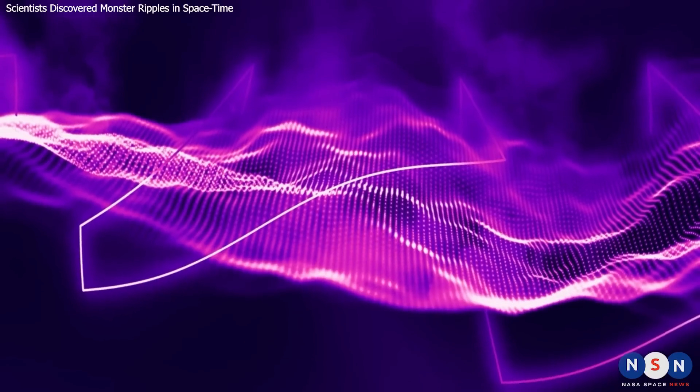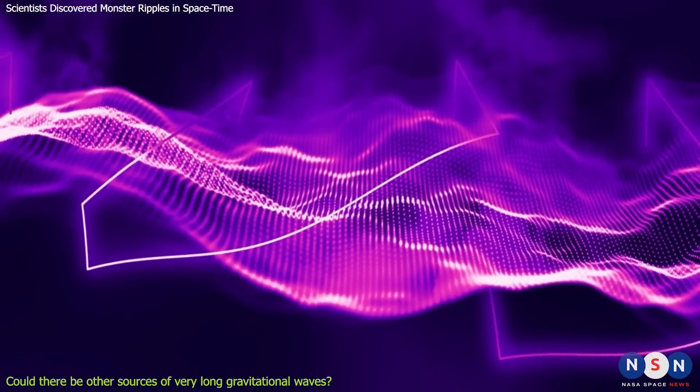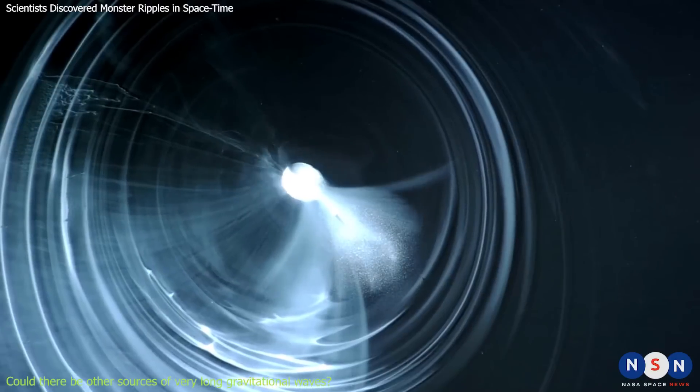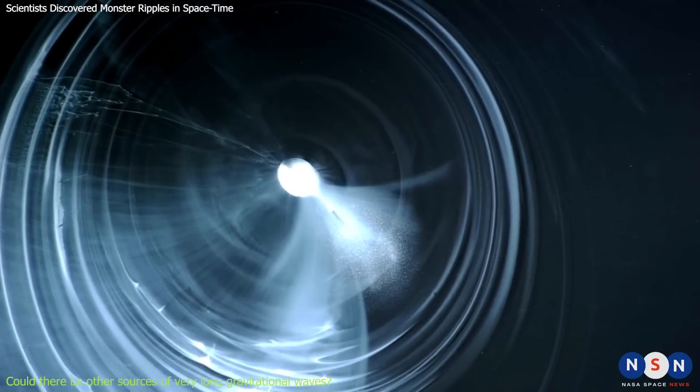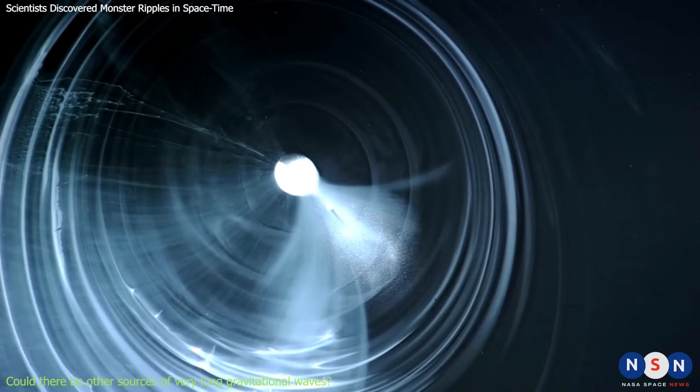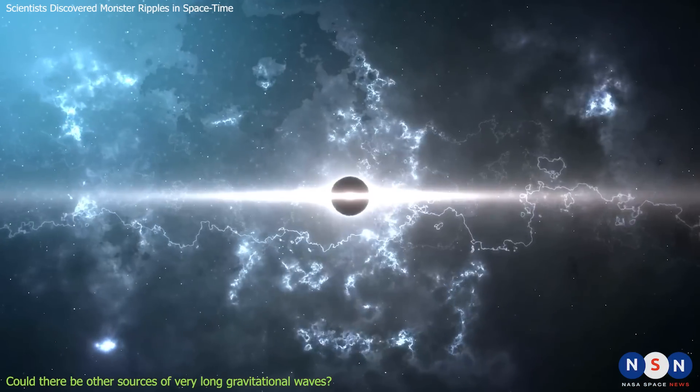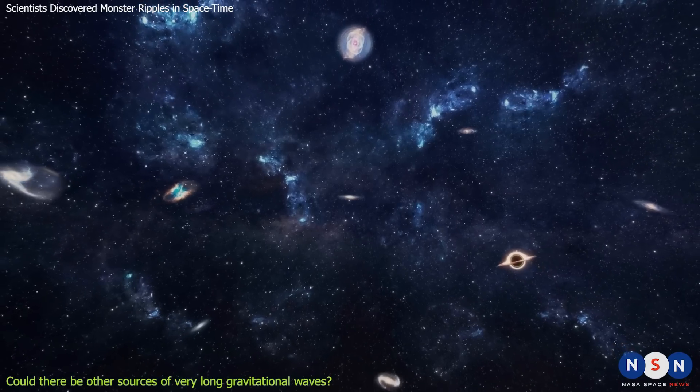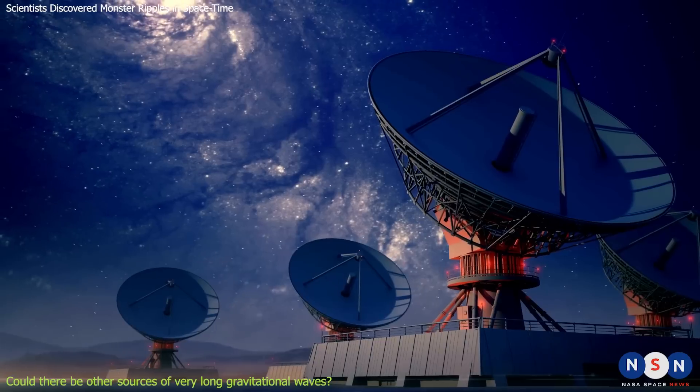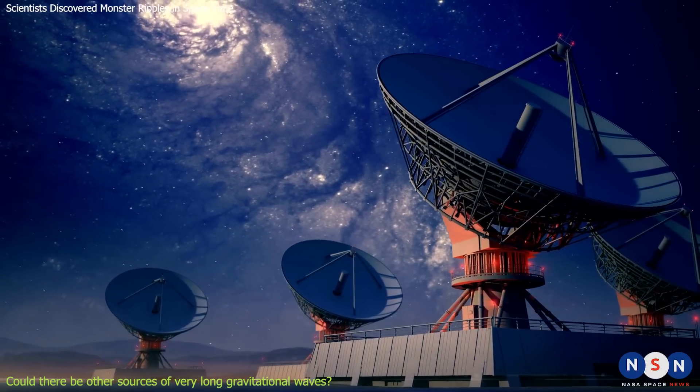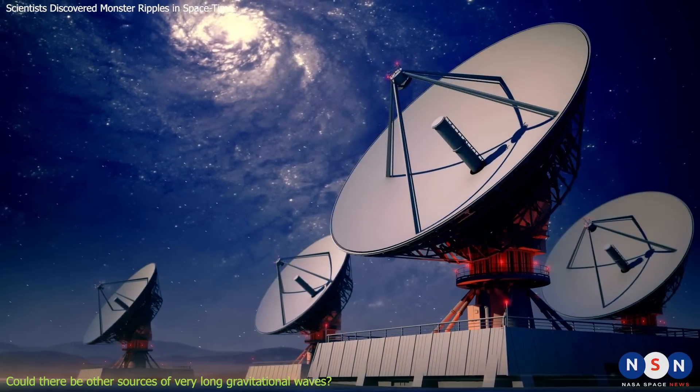Could something other than binary black holes be producing the stochastic background? The answer is yes, but it is unlikely. There are other possible sources of very long gravitational waves, such as cosmic strings, primordial black holes, or inflationary fluctuations in the early universe. But these scenarios are either very speculative, or have been ruled out by other observations.